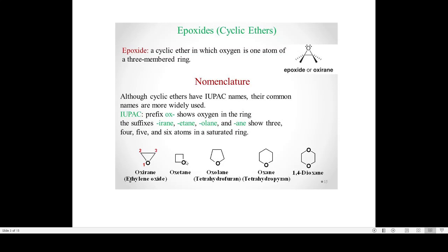With four carbon atoms, we call it oxetane — we add the prefix 'ox-' and '-etane' for the four-membered ring. For a five-membered ring, we call it oxolane. For six members, we call it oxane. When we have two oxygen atoms, it is called 1,4-dioxane. This is all about the nomenclature of cyclic ethers.